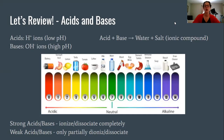Let's review acids and bases. An acid is something that has a low pH and contains hydronium ions or hydrogen ions — you're going to see H⁺ in their formula. Hydroxide ions are what's in a base — that's the OH⁻ ion — and these have a high pH.